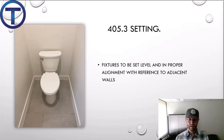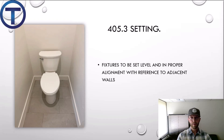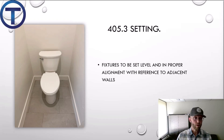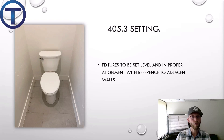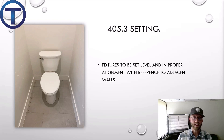405.3 talks about the setting of fixtures and says fixtures shall be set level and in proper alignment with reference to adjacent walls. When a toilet is set, it needs to look straight — not crooked. You're looking at the grout lines of the tile and the surrounding walls. That may involve measuring and checking distances. In the end, you should be able to step back and see that it's set level and straight — that is a proper setting of a fixture.